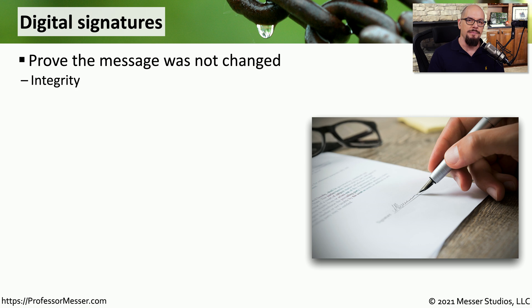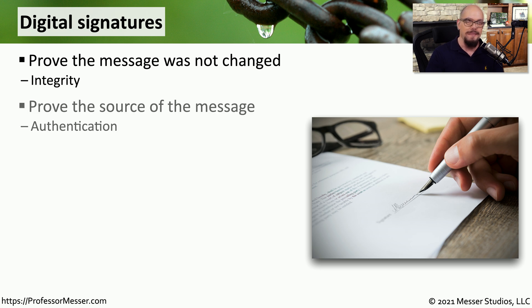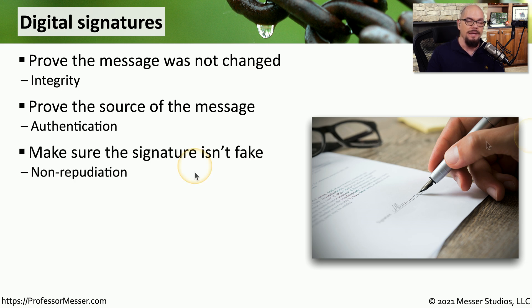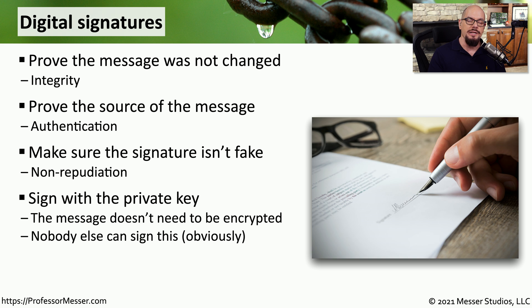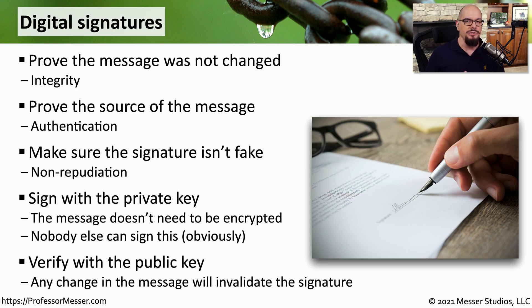Another useful function of hashing can be found with digital signatures. Digital signatures allow us to send information to another party and have that person confirm that what they received is exactly the information we originally sent. These digital signatures prove the source of the message. We can verify that the digital signature isn't fake, hasn't been modified, and really came from the original person. Because the digital signature is made with the sender's private key, we know the document could not have come from someone else. The digital signature is created with the private key and verified with the public key.